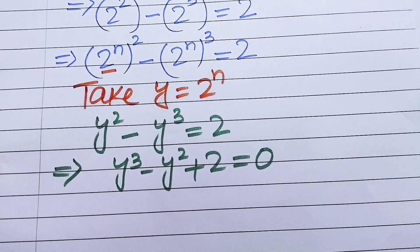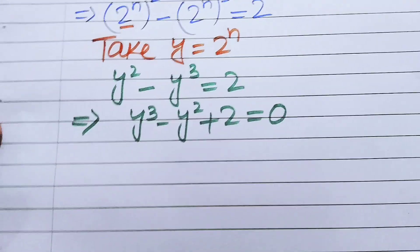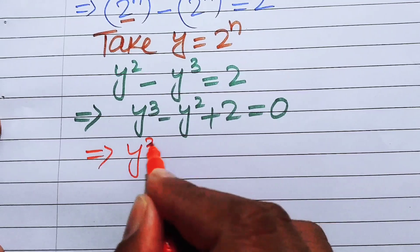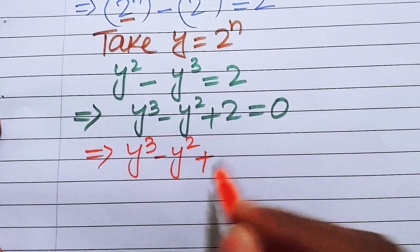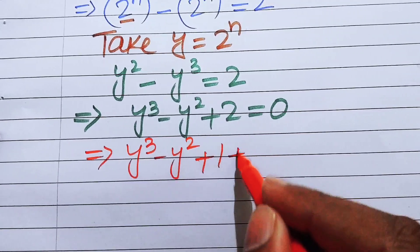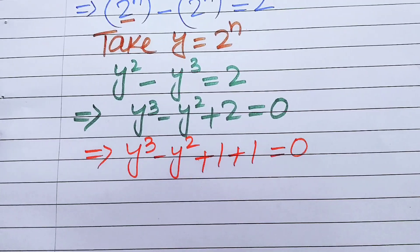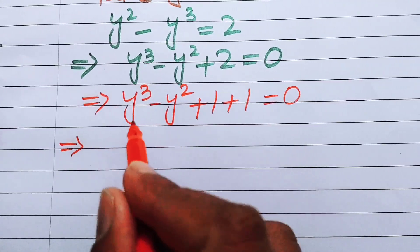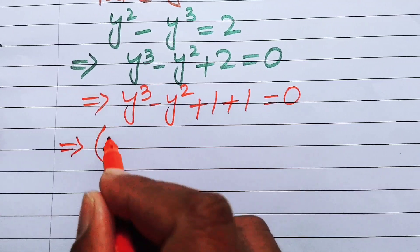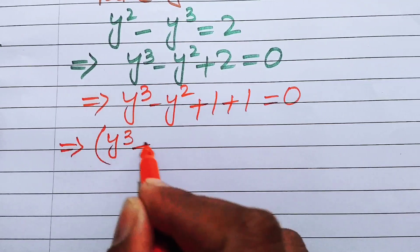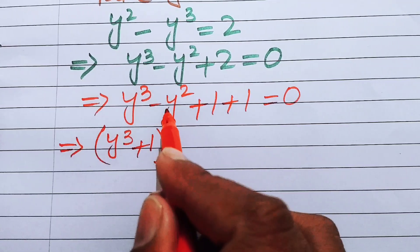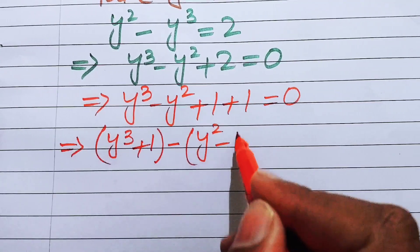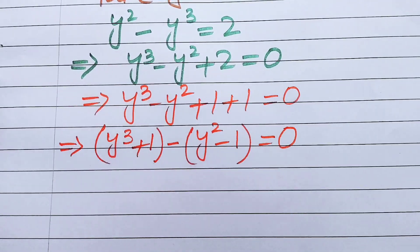To factor the cubic equation we first break the 2, writing it as 1 plus 1, giving y cubed minus y squared plus 1 plus 1 equals 0. We then pair y cubed with 1, and take out minus 1 as a common factor from the remaining terms, getting y cubed plus 1, minus 1 times y squared minus 1, equals 0.